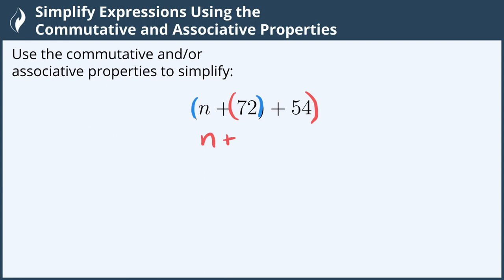So the new grouping would be n plus 72 plus 54. Then I do 72 plus 54 which gives us 126.